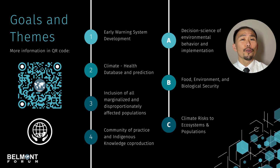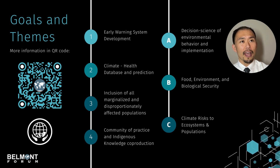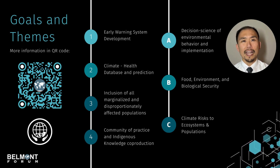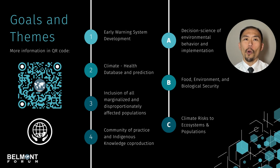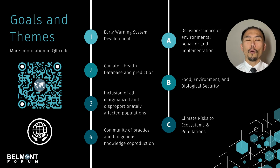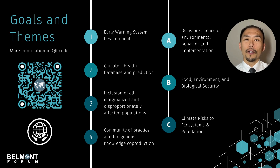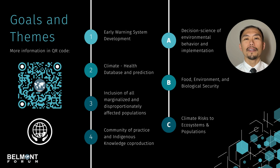Regardless of what goals you choose, they must address these three themes. Theme A: decision science of environmental behavior and implementation — in other words, nature-based solutions, implementation science, or linking science to policy and informed decision-making. Theme B: food, environment, and biological security — in other words, food-borne, water-borne, and vector-borne diseases. And lastly, Theme C: ecological and environmental health. From these themes, you must choose A, then you can choose B and/or C.